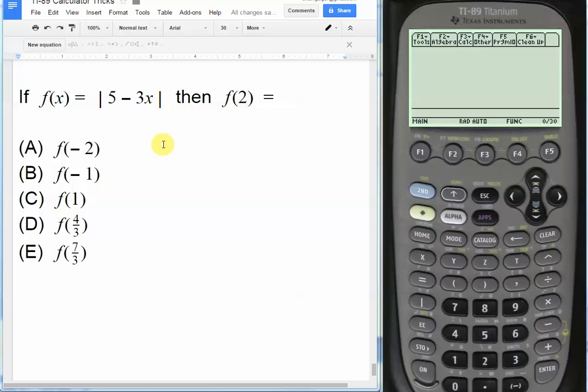Okay, in this video we're going to learn how to get creative by using the trace function to solve difficult questions. So the problem here is f of x equals the absolute value of 5 minus 3x. Then f of 2 equals what? So we need to find out what the output of f of 2 is when we plug in 2 for x here, and then we have to see which of these five choices matches.